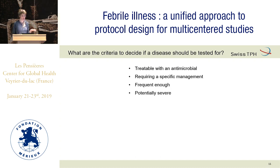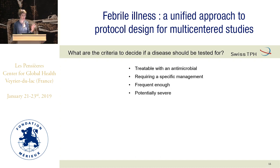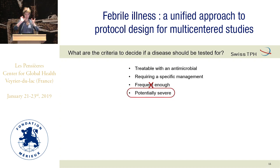It should also be frequent enough — that's a basic concept — and potentially severe. We don't care about very mild diseases. The problem is these two criteria can be in total contradiction. What do you do when you have a very rare disease that is potentially severe? That's a real challenge, and you have three situations.